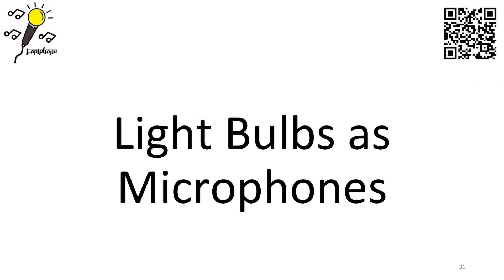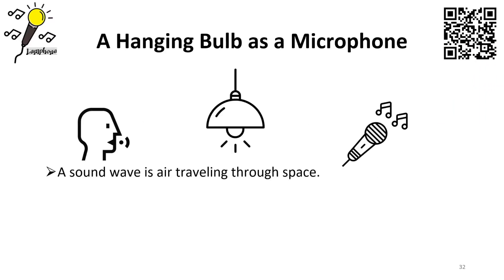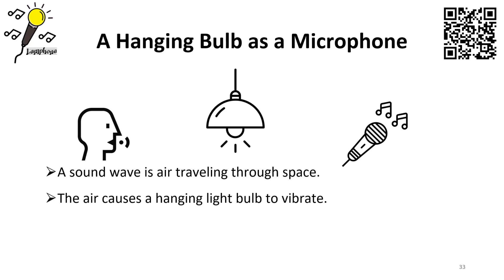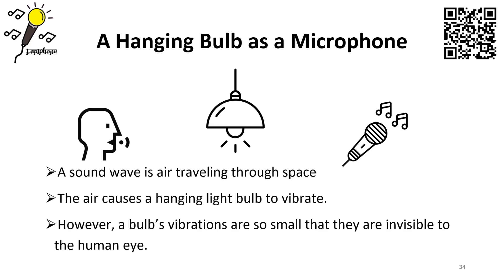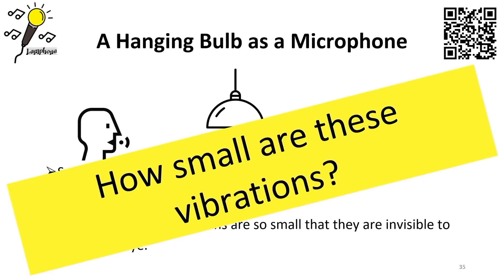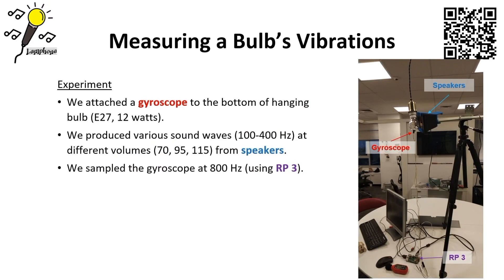How can light bulbs be used as microphones — specifically as diaphragms? Sound waves cause air to travel through space, causing a hanging light bulb to vibrate. However, a bulb's vibrations are so small they are invisible to the human eye. To measure them, we attached a gyroscope to the bottom of a hanging bulb, produced various sound waves at different volumes from nearby speakers, and sampled the gyroscope at 800 Hz using a Raspberry Pi 3.